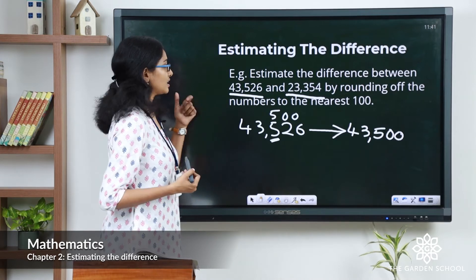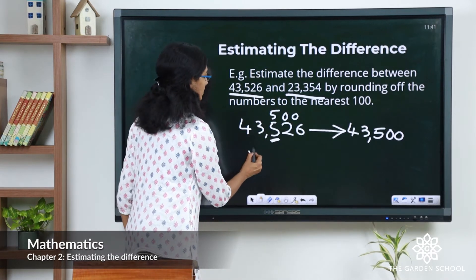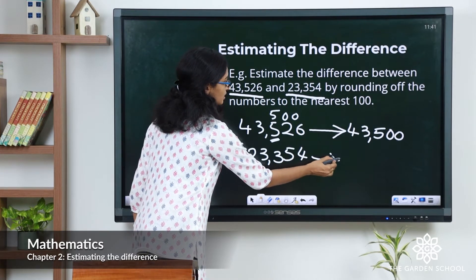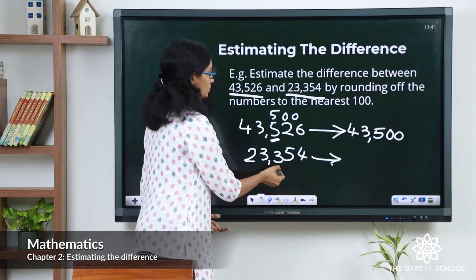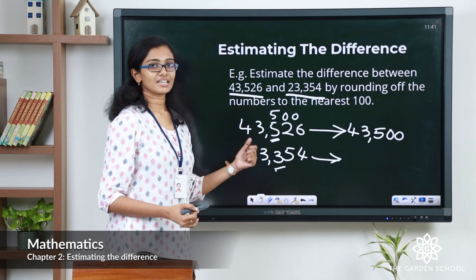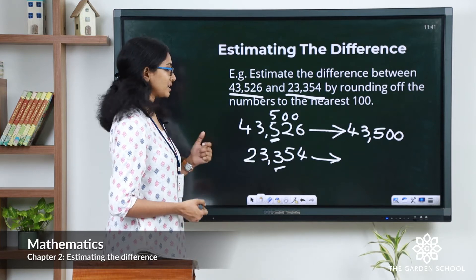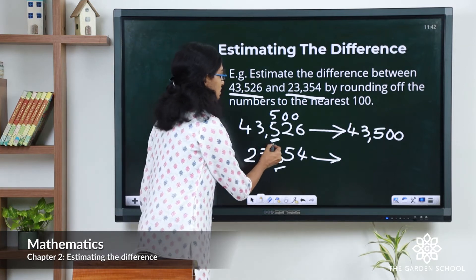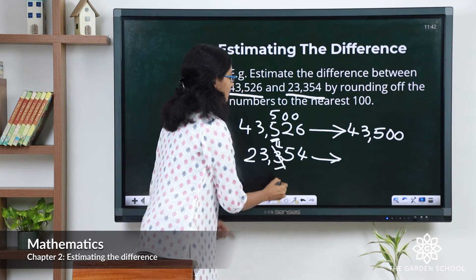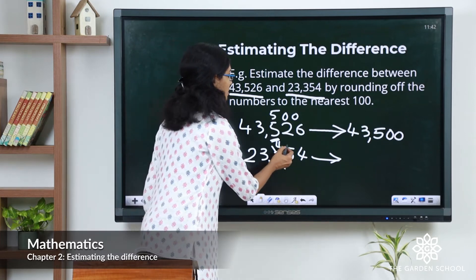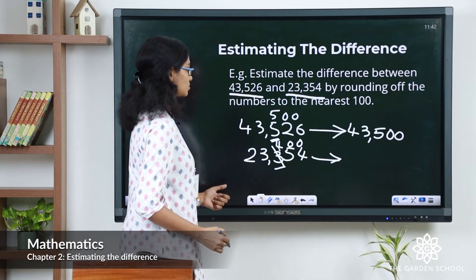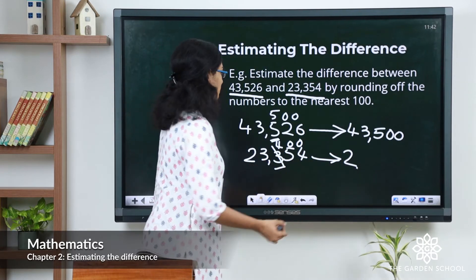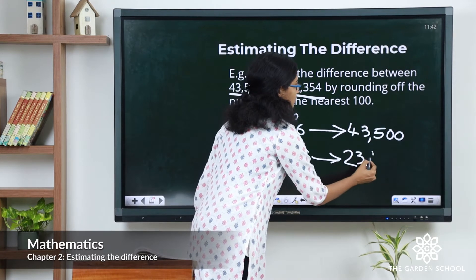Now let's round off the subtrahend. The subtrahend is 23,354. Let's round this off to the nearest hundred. The rounding digit is 3, and the digit to the right of it is 5. When it is 5 or more than 5, we add 1 to the rounding digit. So this 3 becomes 4, and the tens and ones places are changed to zeros. So 23,354 rounded off to the nearest hundred gives you 23,400.